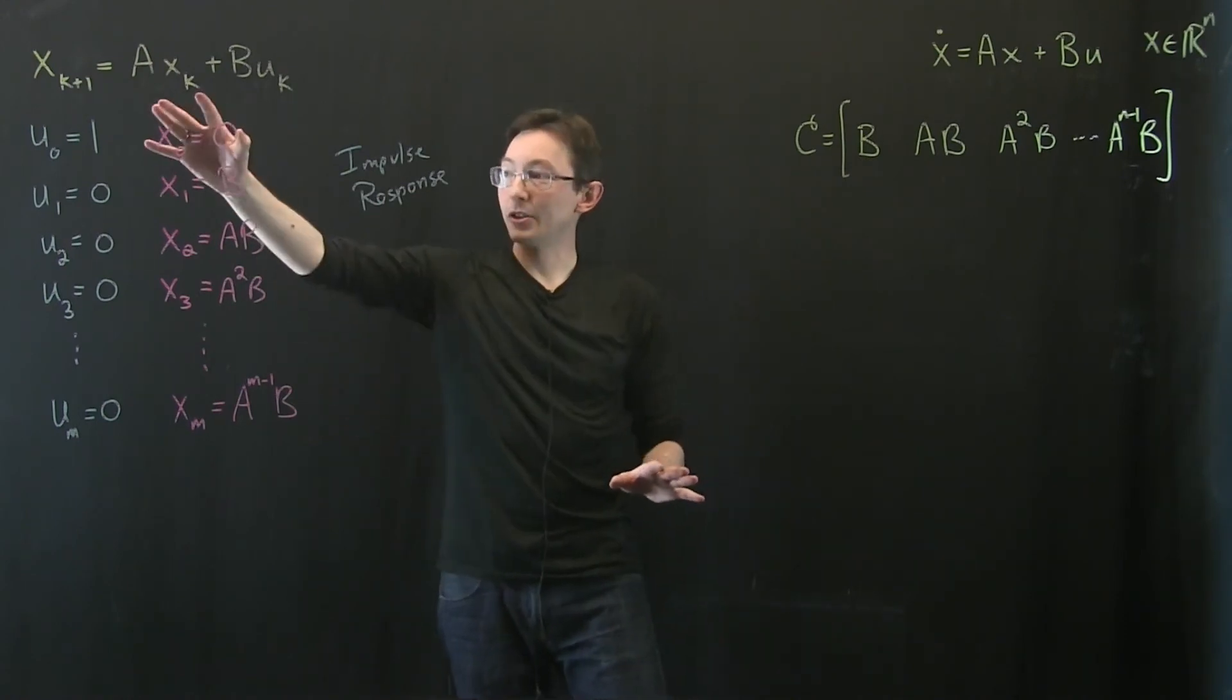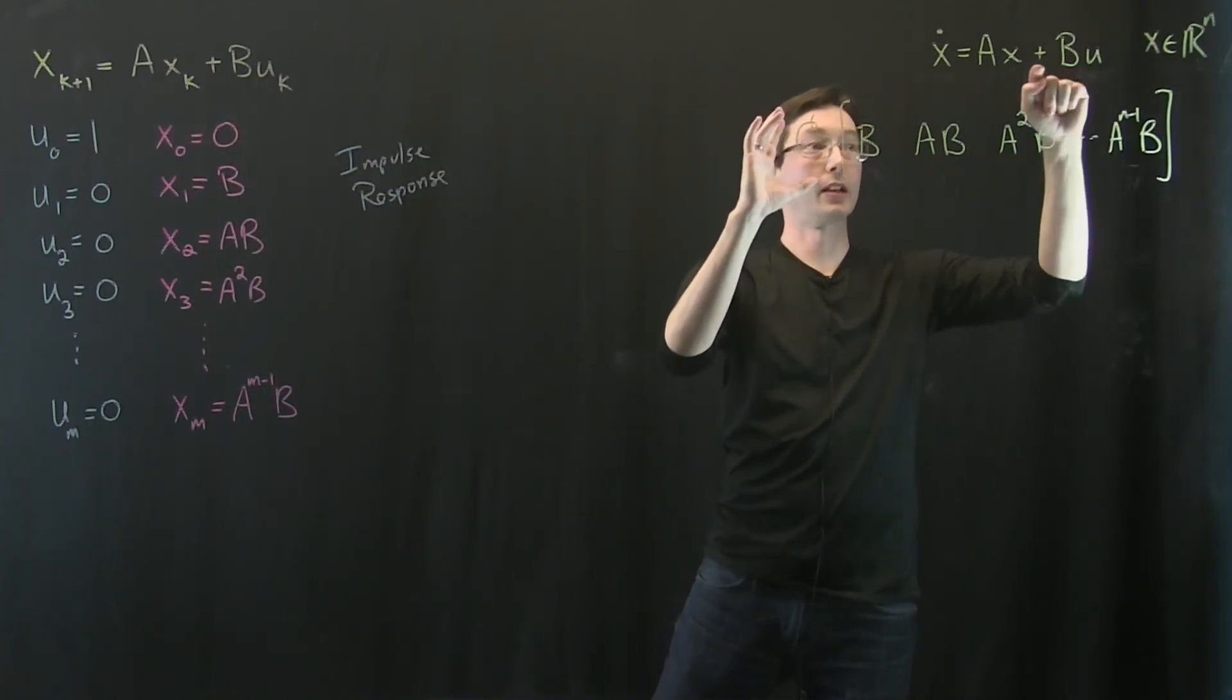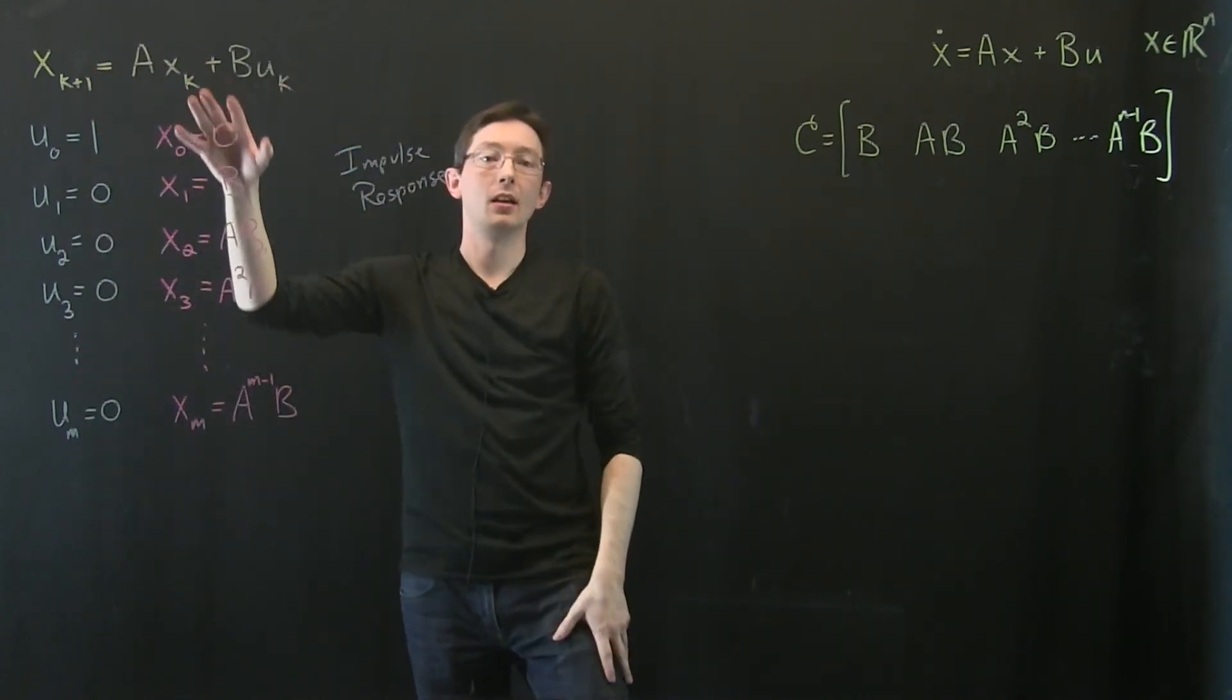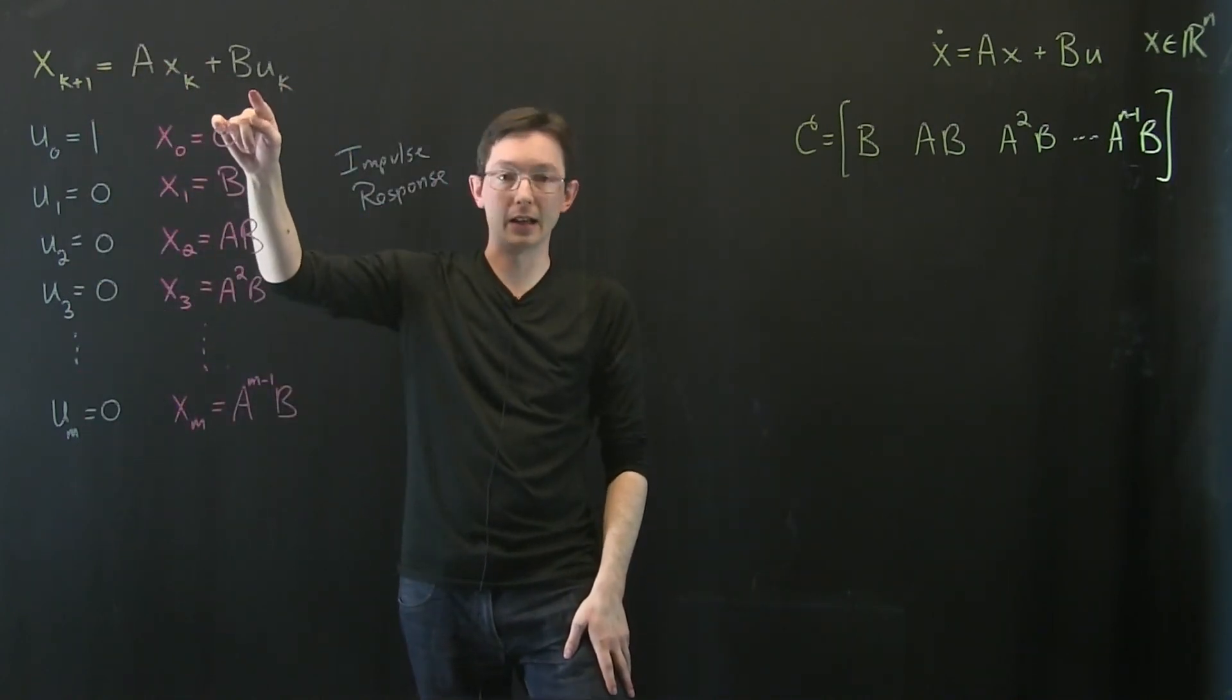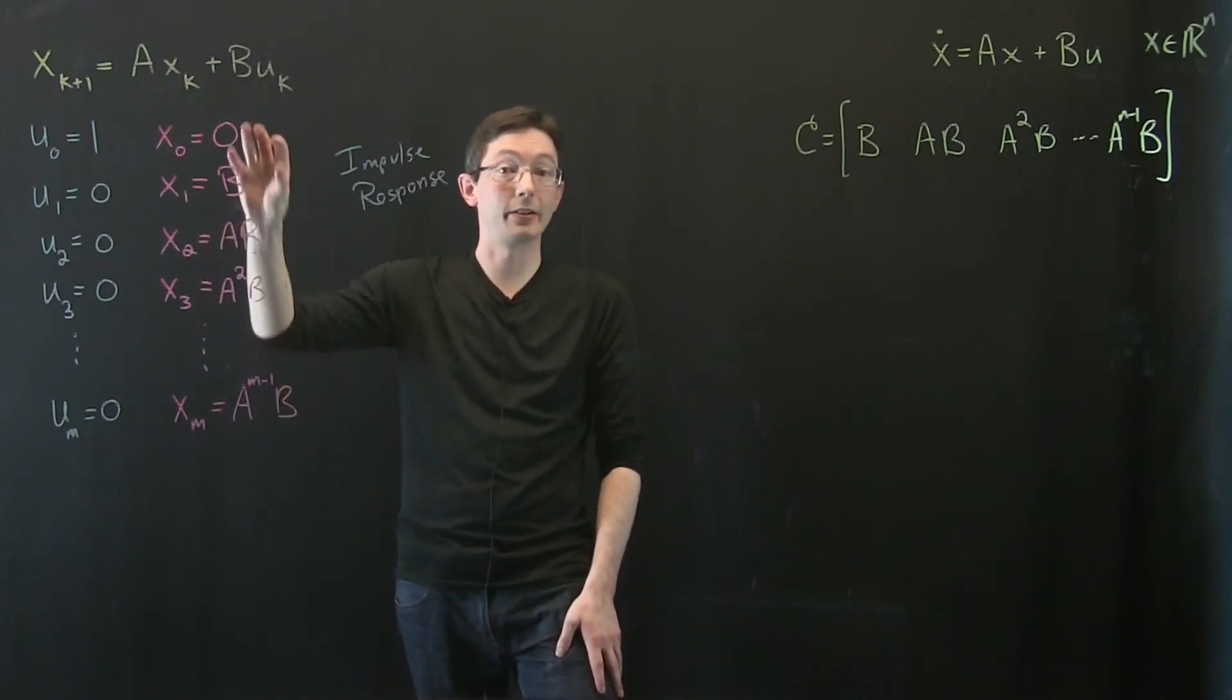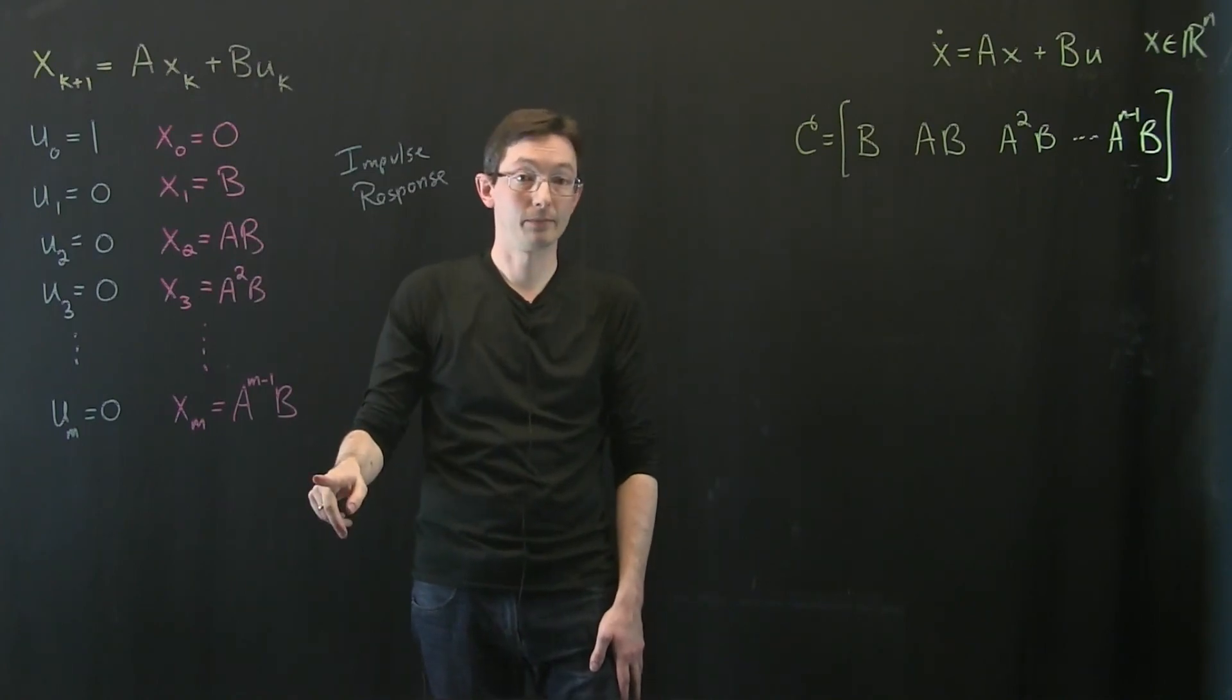Okay I still haven't shown you how this directly ties to this matrix for the continuous time system, but I just wanted to give you this analogy of the impulse response in discrete time and essentially how this gives you an idea that the states that are reachable with control are going to be in this subspace. Okay thank you.